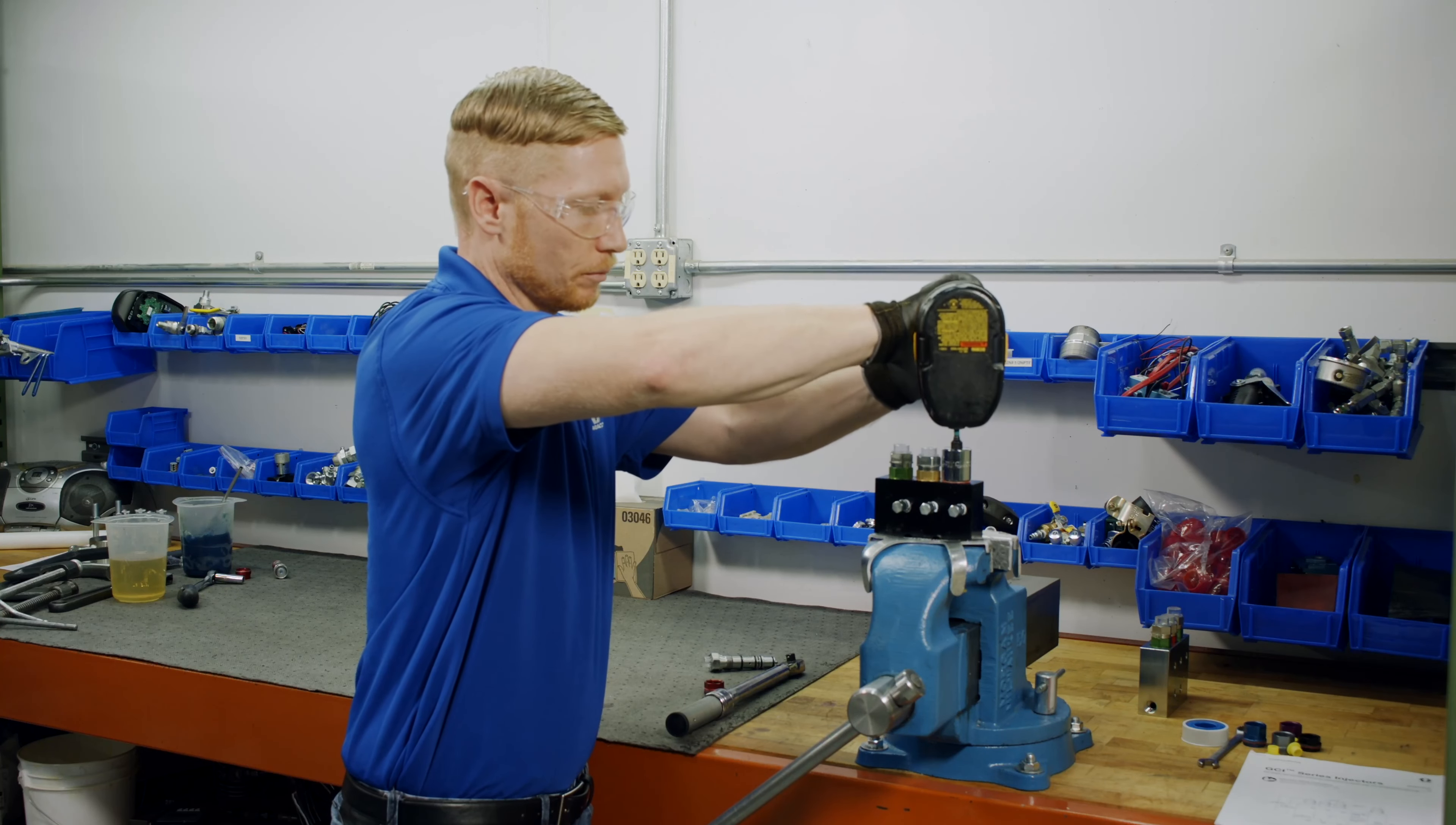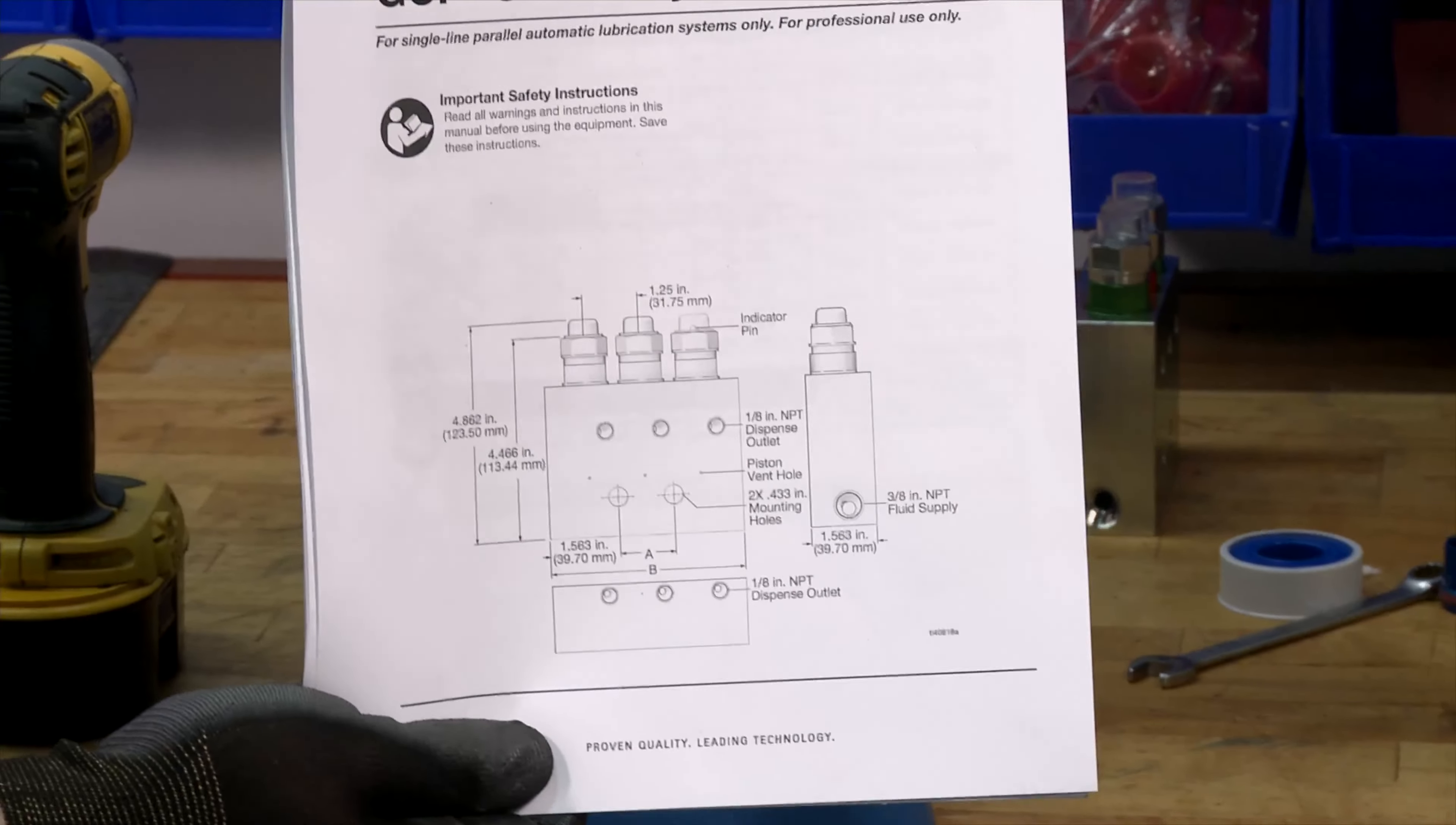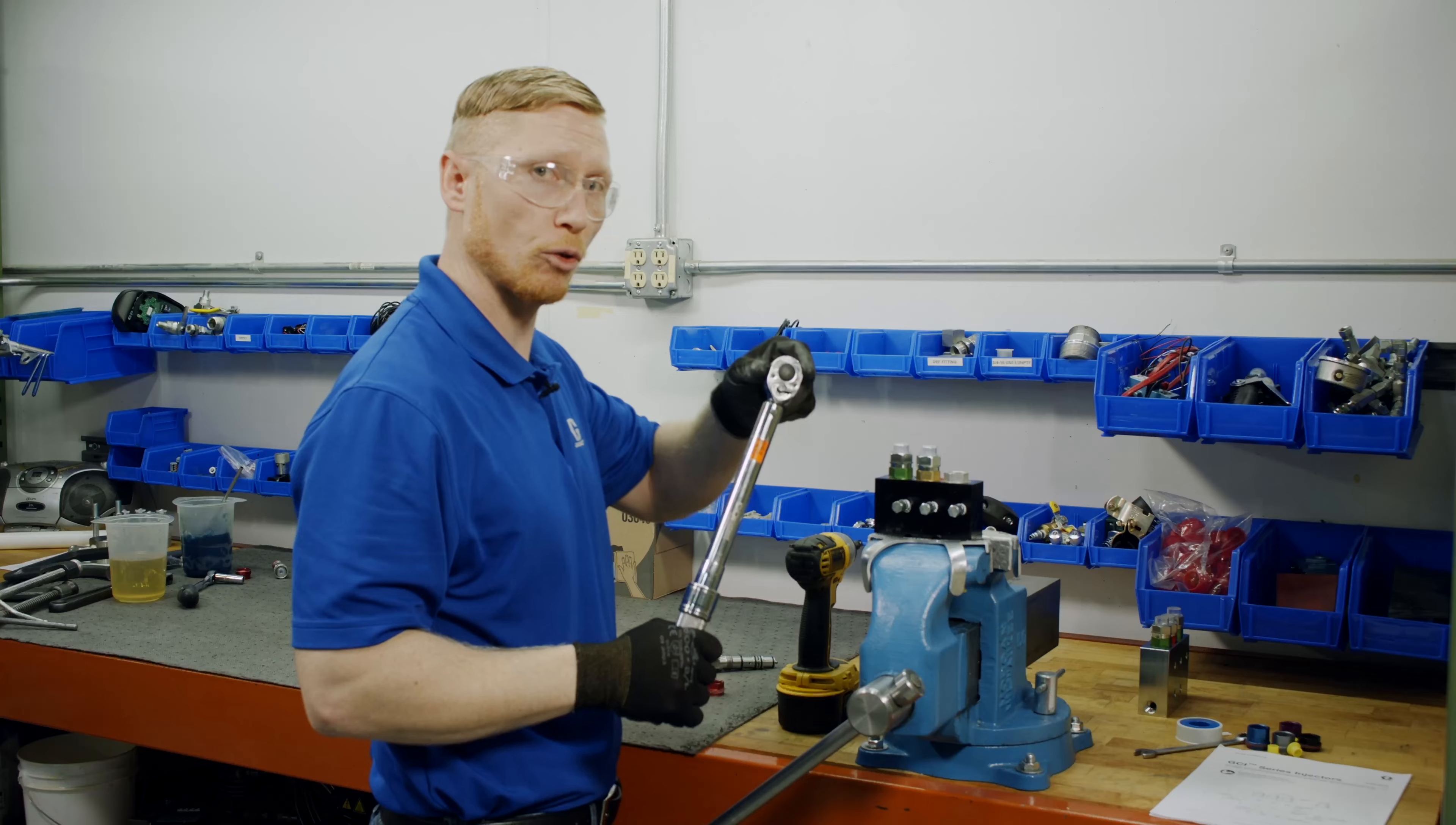So to reinstall, loosely tighten your output spacer onto the manifold and get your torque wrench. We're using the value that's found in your GCI series injector manual. Okay, now that's torqued.